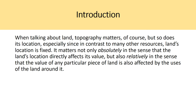When talking about land, topography matters, but so does its location, especially since, in contrast to many other resources, land's location is fixed. It matters not only absolutely — in the sense that the land's location directly affects its value — but also relatively, in the sense that the value of any particular piece of land is also affected by the uses of the land around it. The best example is real estate: the three factors that influence a property's value are location, location, location. The community and area around that respective piece of land will influence its overall use and quality of the environment.